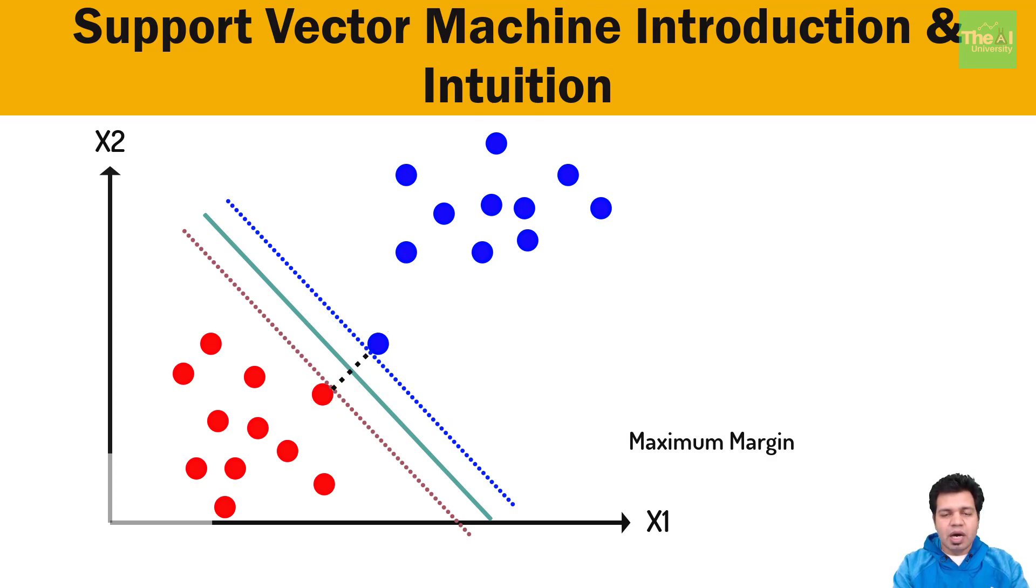Now, if you add these two margins, then it has to be maximum in order to treat this line as optimal line. This optimal line has a specific name given to it and which is maximum margin hyperplane. Other lines are also hyperplanes but this is the maximum margin hyperplane.